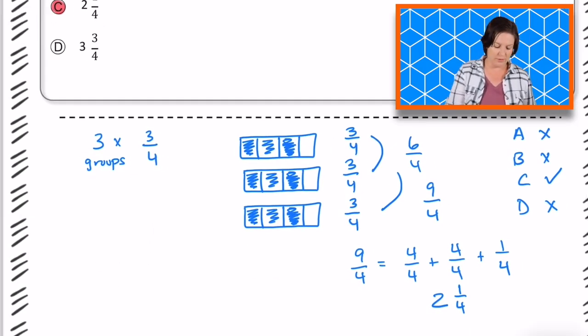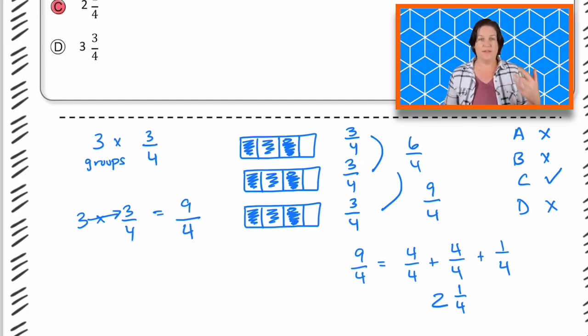Now you may have done it a different way. Maybe you did it like this, where you had 3 times 3/4, and you said that 3 times 3 equals 9, so 9/4. That would have been fine too. And then you could know how to change it into a mixed number there.